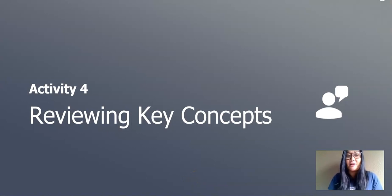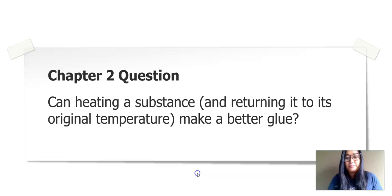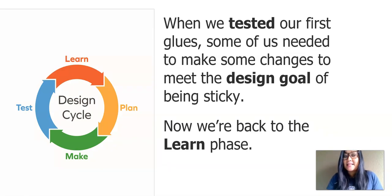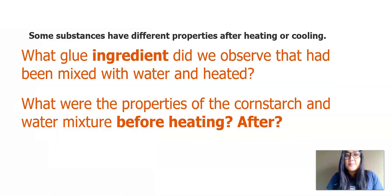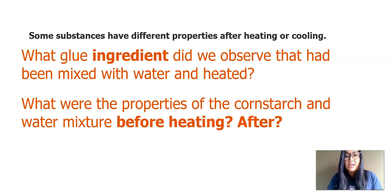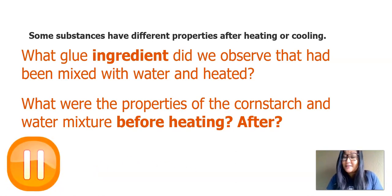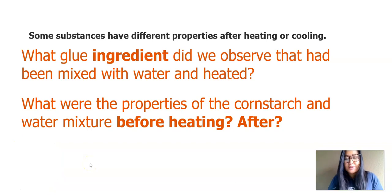In this next activity of our lesson, we will review the key concepts of our chapter. Remember, we're going back to this Chapter 2 question: can heating a substance and returning it to its original temperature make a better glue? Let's go back to our design cycle. When we tested our first glues, some of us needed to make changes to meet the design goal of being sticky. Now we're back to the learn phase. Some substances have different properties after heating or cooling. What glue ingredient did we observe that had been mixed with water and heated? Pause the video, jot down your ideas, and I will share mine next.